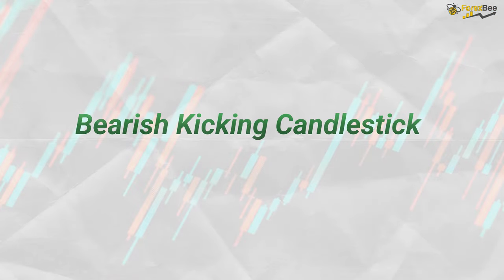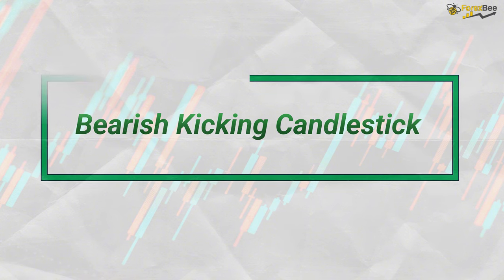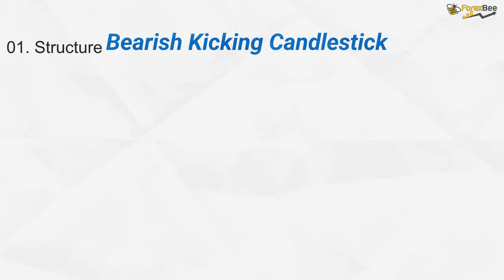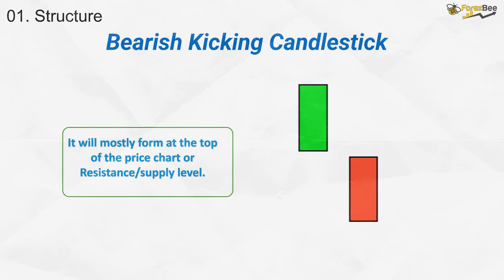Now, let's break down the structure of the bearish kicking pattern. First, we have a large bullish candlestick that gaps up significantly from the previous session, showing strong buying pressure and optimism. Next, the second candle is a large bearish candlestick that gaps down below the previous session's low, signaling a sudden shift in market sentiment with sellers taking over decisively. The key feature is the clear gap between the two candles, showing an abrupt reversal from bullish to bearish — a strong signal of a potential downtrend.